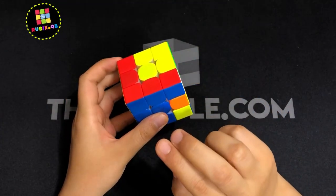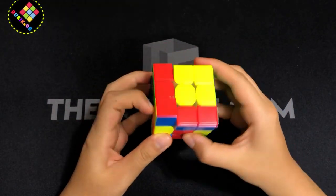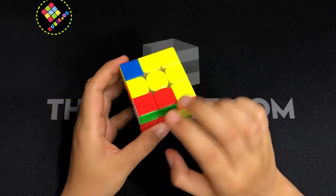And then he went for the third pair. So he did the cube rotation and then inserted it right here. And finally the last pair.